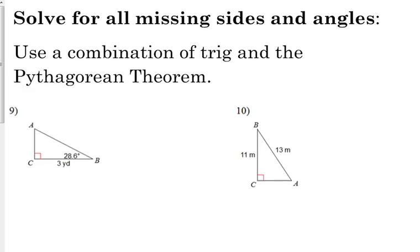What we're going to use is a combination of trig and Pythagorean theorem. So with number 9, we are given one side and one angle. That means we've got to find the missing angle and the two missing sides.